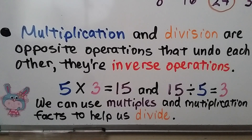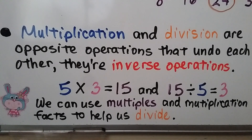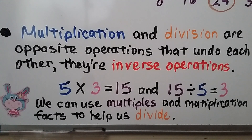Multiplication and division are opposite operations that undo each other — they're inverse operations. 5 times 3 is equal to 15, and 15 divided by 5 is equal to 3. They're like fact families. We can use multiples and multiplication facts to help us divide.